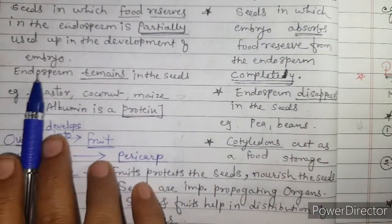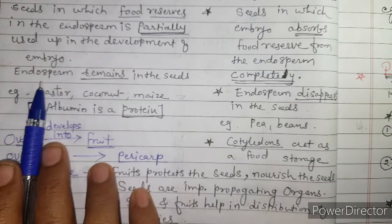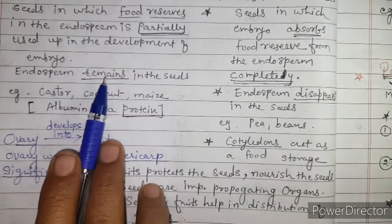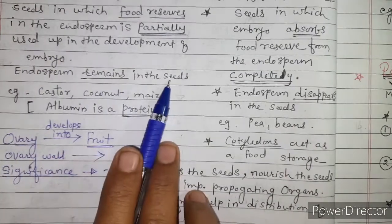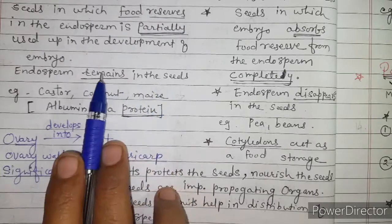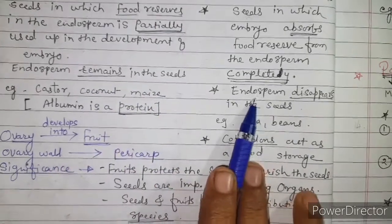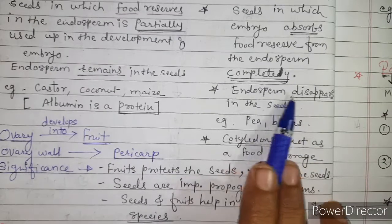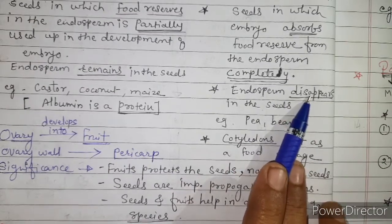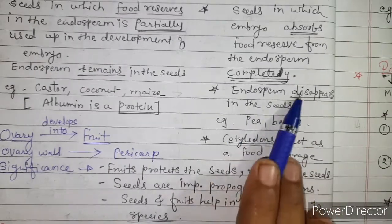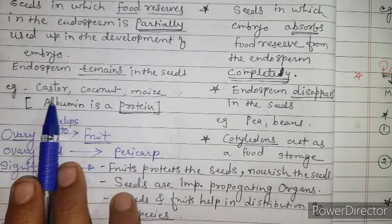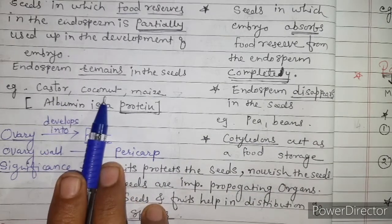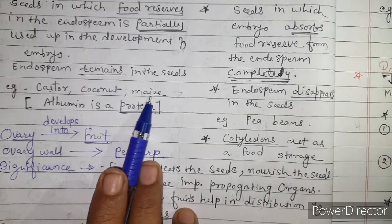Examples: since endosperm remains in the seeds, examples of endospermic seeds are castor, maize, and coconut. For non-endospermic seeds, where endosperm disappears from the mature seed, examples are pea and beans.